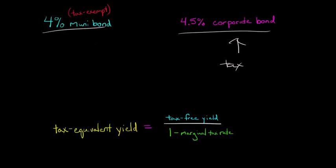Now, if that's a little too abstract, we'll put some numbers to it. In the numerator, we have the tax-free yield, which is 4%. Then we have our marginal tax rate. For our example, let's say the marginal tax rate is 28%. That's the tax bracket you're in.